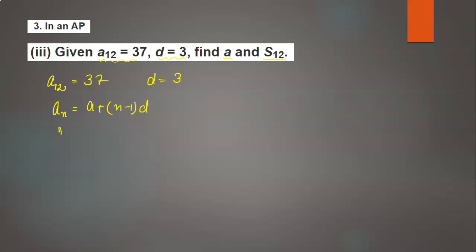Now put n = 12, so a12 = a + (12-1)d = a + 11×3. Since a12 is given as 37, we have 37 = a + 11×3.